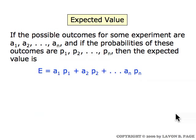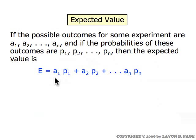Now, in general, this is what the concept of expected value is. If you take the possible outcomes of some experiment, which is some set of numbers, and if the probabilities of the outcomes are known, then the expected value is obtained simply by taking each possible outcome and multiplying it times its probability, and then adding up all those terms.